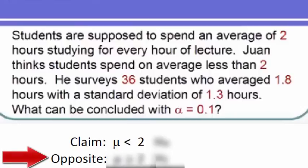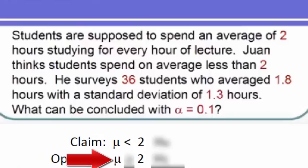Next, we write the word opposite, and we write the opposite of the claim. We do that by writing the same two symbols, mu and two, and then we insert the opposite inequality symbol as the inequality symbol found in the claim. Since the inequality symbol found in the claim was less than, which points to the left, the opposite will point to the right, greater than. And since the claim had no equal sign, the opposite will have an equal sign.